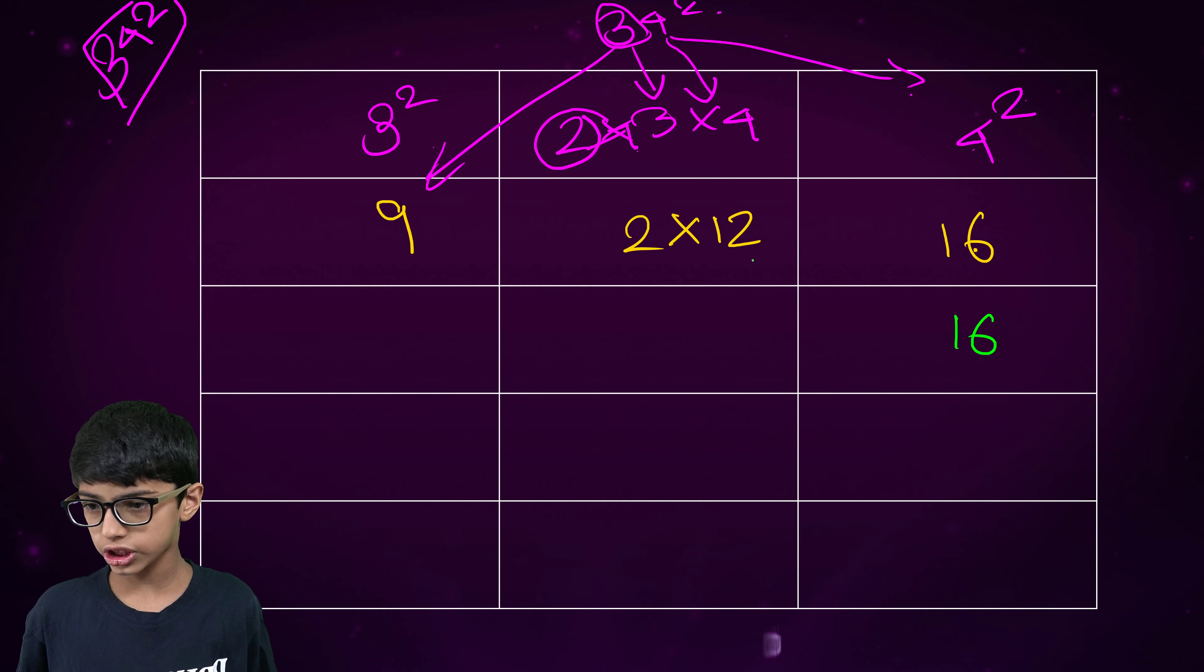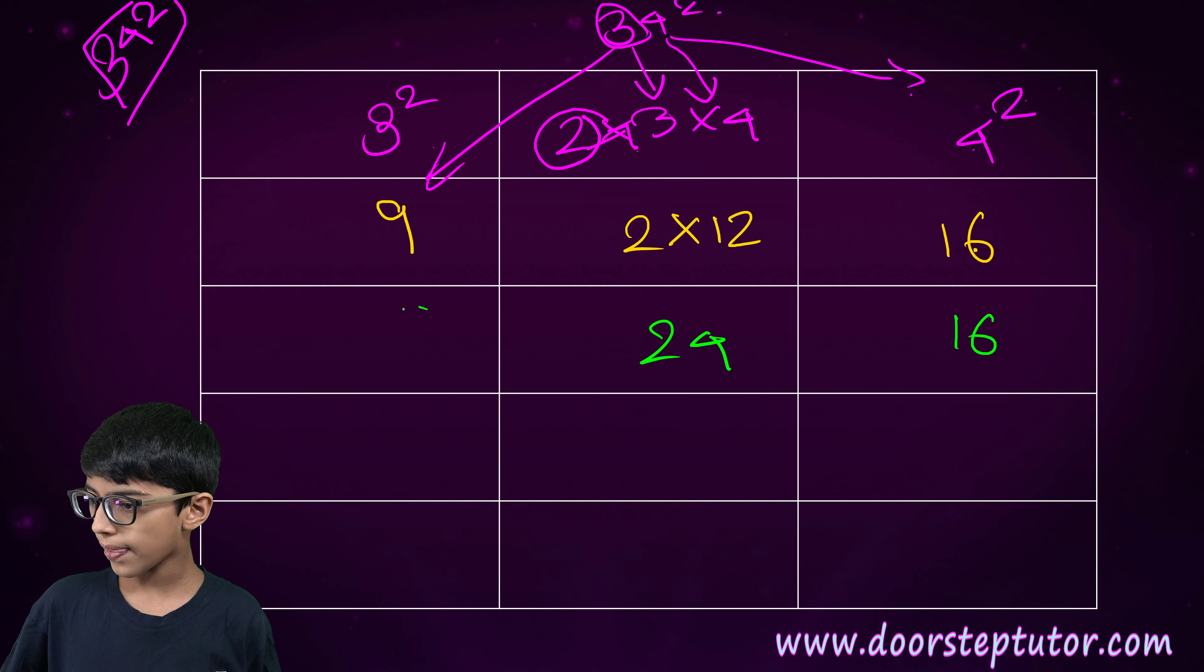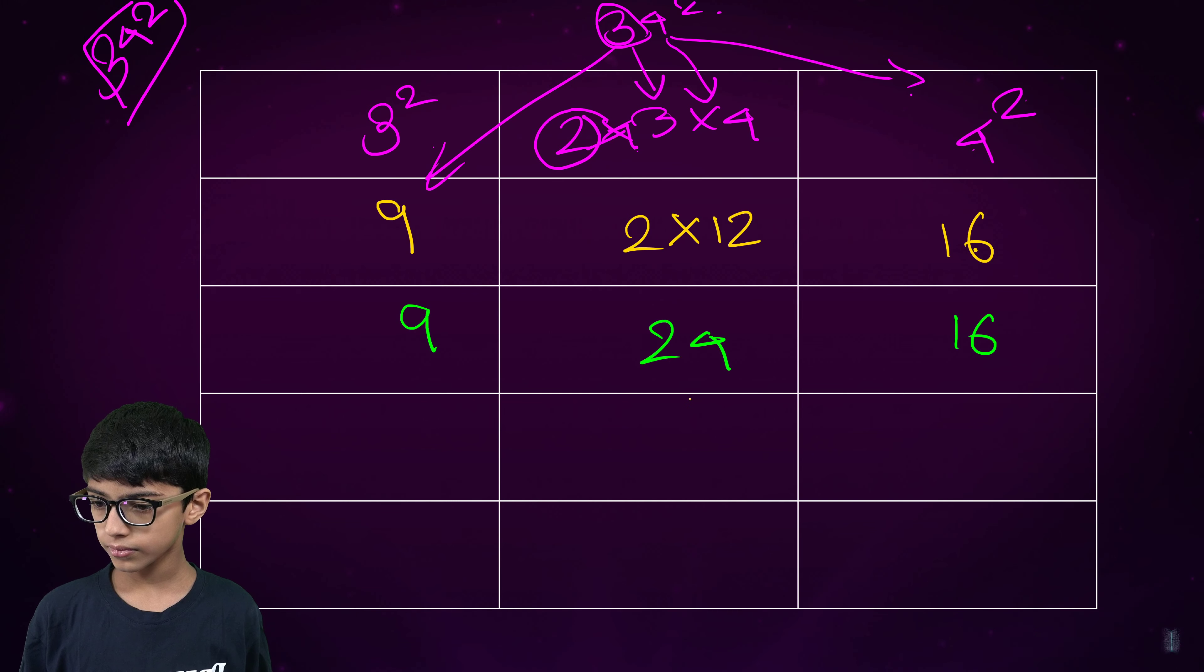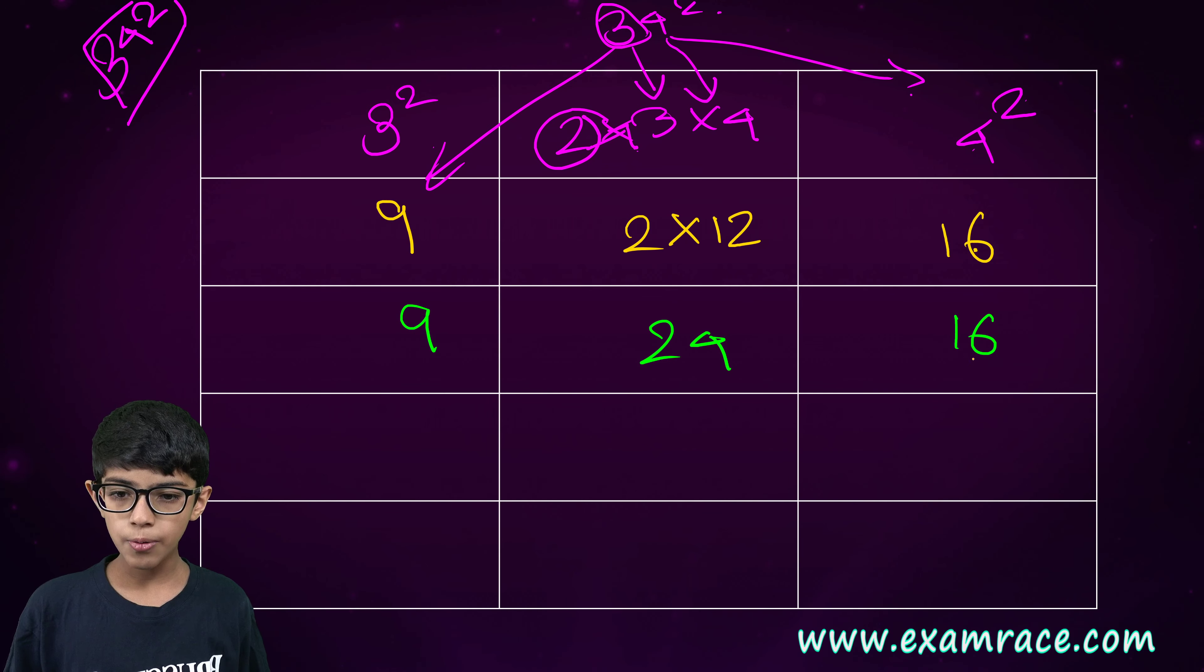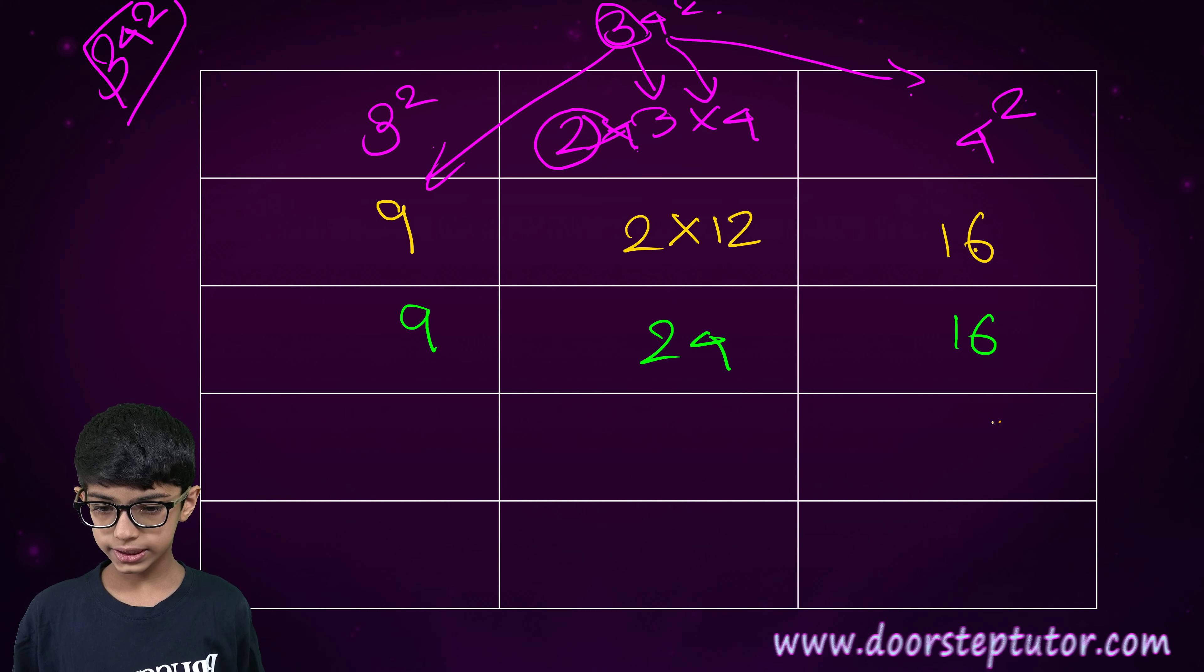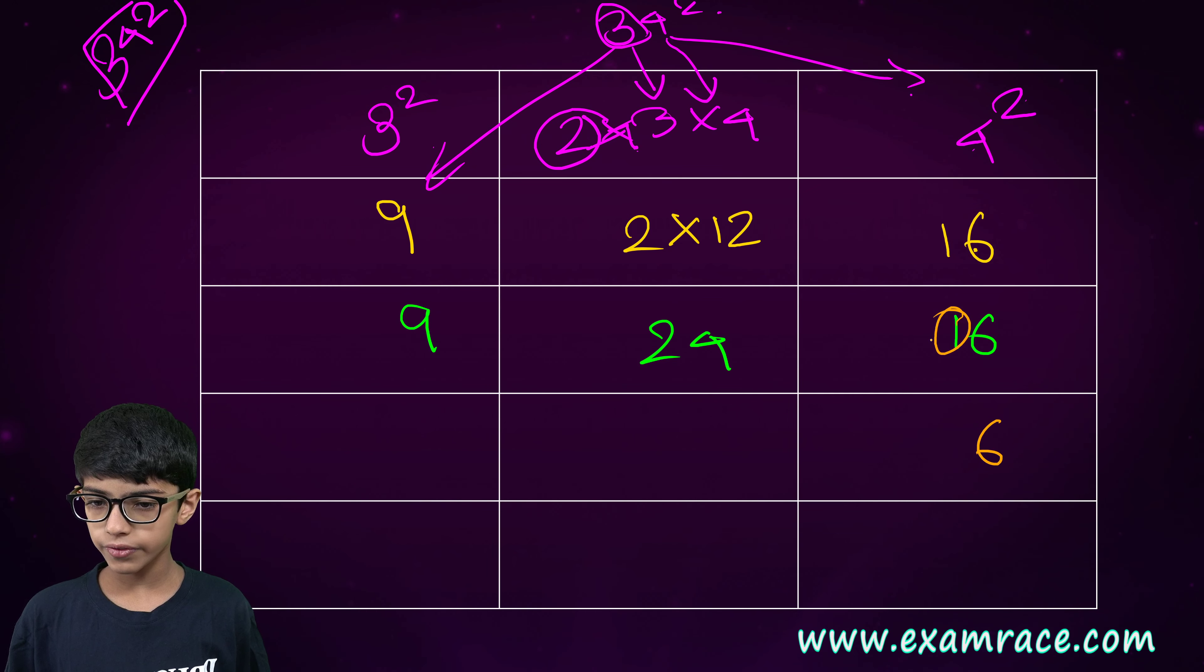Next, sixteen. Two into twelve that is twenty-four. And nine. Now, six will come here. One will be carried.